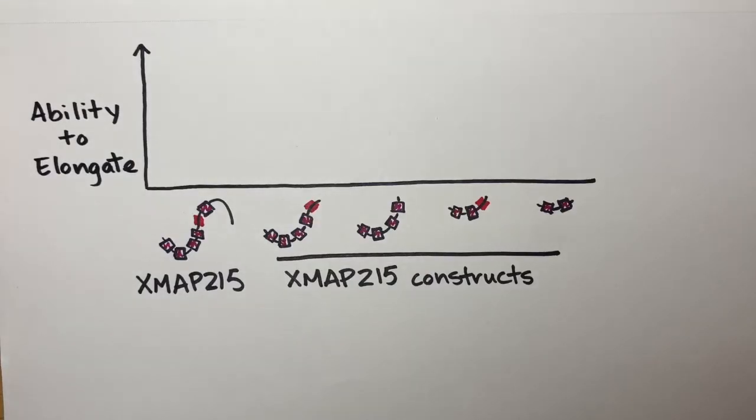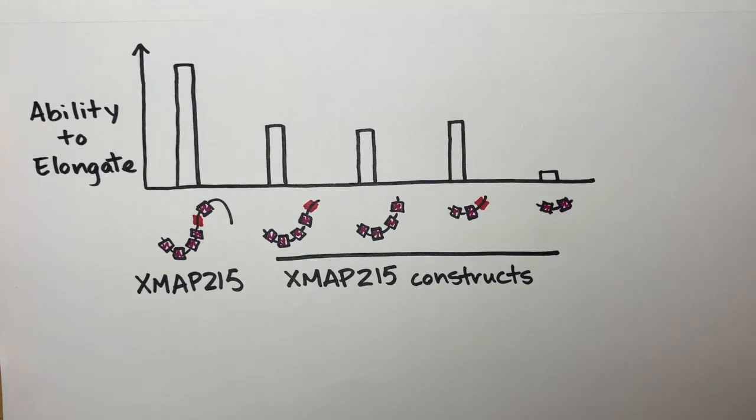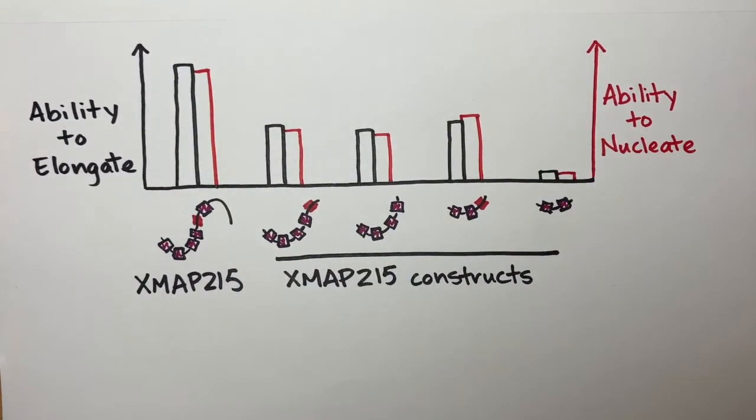We made XMAP215 constructs that differed in their ability to elongate. We found they also differed in their ability to nucleate, and that these two abilities correlated closely.